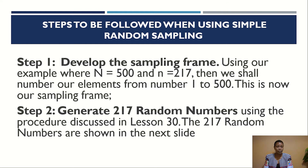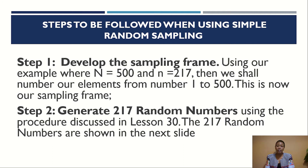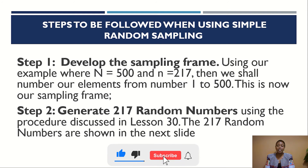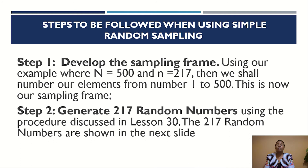We will still use the example where our population is 500 and we have determined our sample size to be 217. In lesson 29, we discussed the strategies we employ to determine sample size. When the population is 500, using the Krejcie and Morgan table, the sample size selected is 217. Once we have our population and sample size, we need to ensure that we have numbered our population from 1 to 500. This is what we call our sampling frame, where we have numbered our elements from 1 to 500.